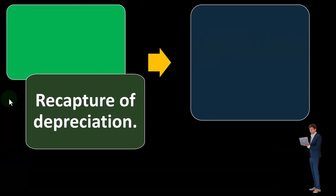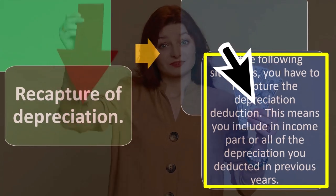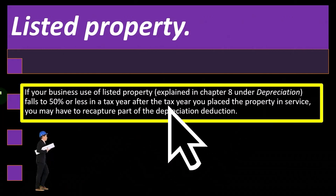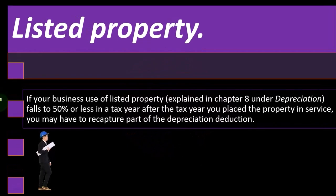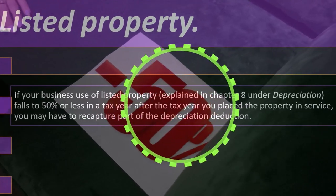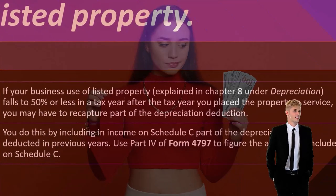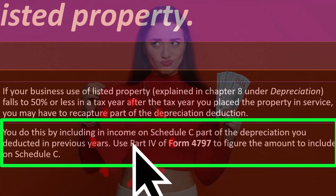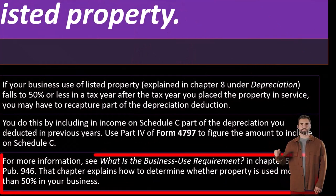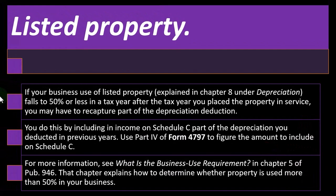Recapture of depreciation: in certain situations you have to recapture the depreciation deduction, meaning you include in income part or all of the depreciation you deducted in previous years. For listed property, if your business use falls to 50 percent or less in a tax year after the year you placed the property in service, you may have to recapture part of the depreciation deduction by including it in income on Schedule C. You can use Part 4 of Form 4797 to figure the amount. For more information, see Publication 946, Chapter 5, which explains how to determine whether property is used more than 50 percent in your business.